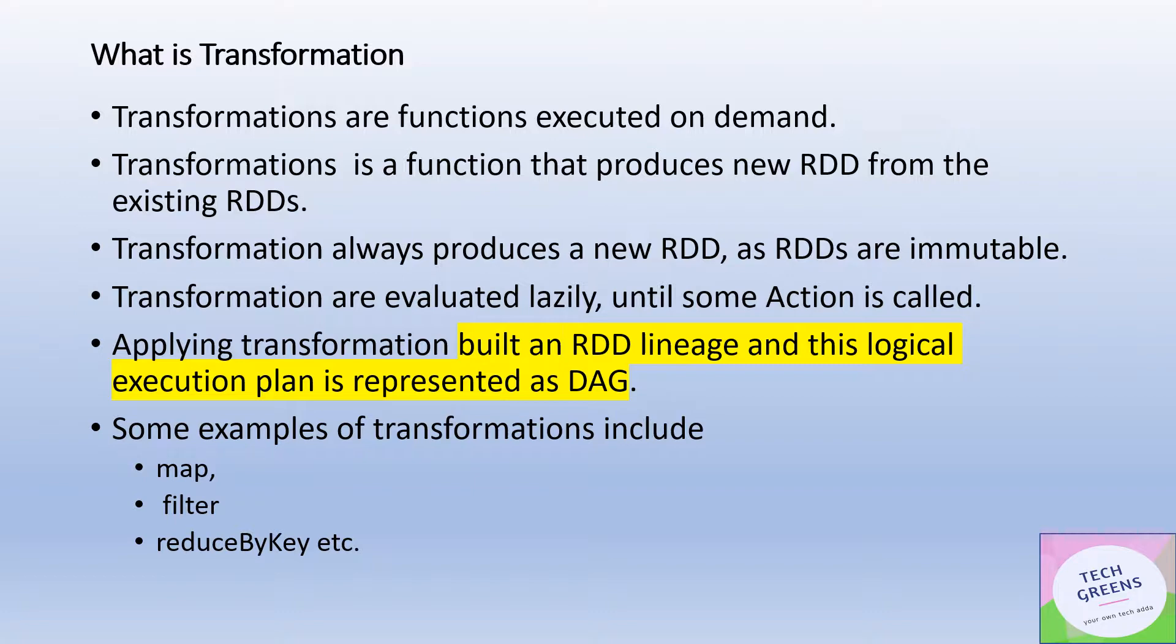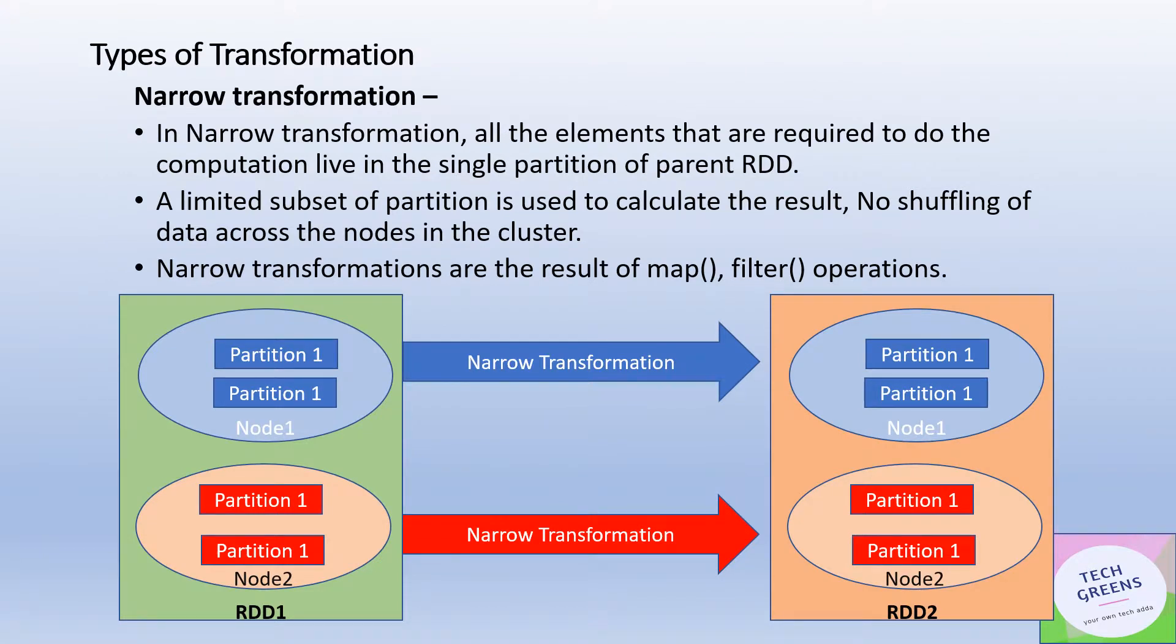Now let's see what is the first type of transformation. It is called narrow transformation. It is a lightweight transformation where you don't have to move or shuffle the data across the nodes. When you're executing the DAG or RDD lineage, the computation is such that all the partitions of data which you want to process reside in the same partition of the parent RDDs as well.